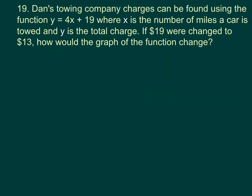This question asks us if the towing company charges can be found using the function Y equals 4X plus 19, where X is the number of miles and Y is the total charge. If the number 19 were changed to 13, how would the graph of the function change?